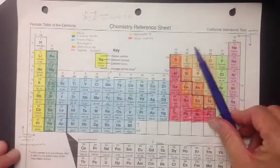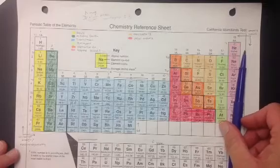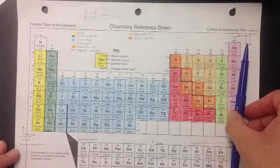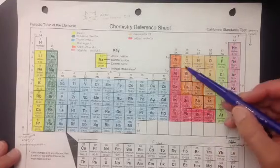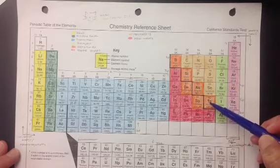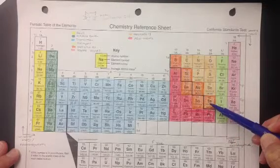Everything to the right of the zigzag line is a non-metal. So everything over here are non-metals. And then if it is touching the zigzag line, like these orange elements, these are metalloids.